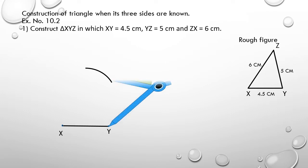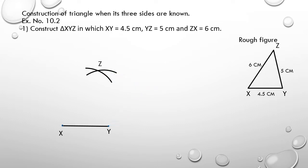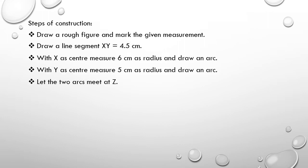Now take your compass, change the radius to 5 centimeter, and draw another arc which cuts the previous arc at point Z. Join lines XZ and YZ — hence triangle XYZ is the required triangle. Always write the steps of construction in the instruction mode.